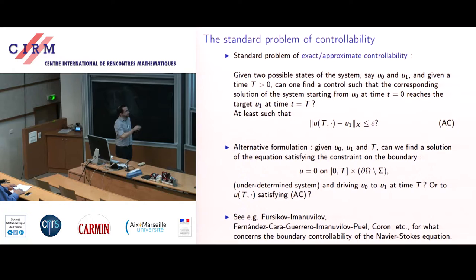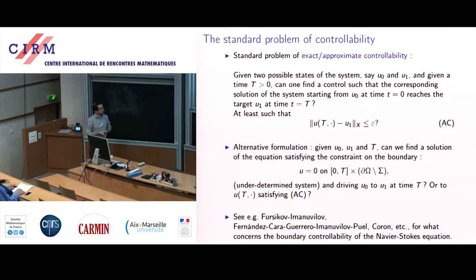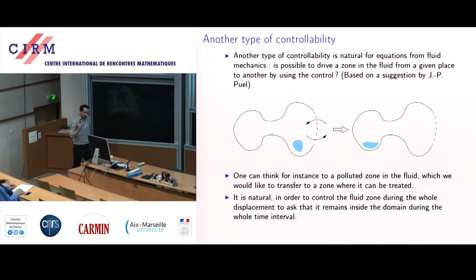There are many references about what concerns the controllability of the Navier-Stokes systems — it's still a subject with a lot of ongoing research. But this is not the type of controllability I am going to consider. Instead, I am going to consider the so-called Lagrangian controllability, which is a question that emerged a few years ago, mainly due to suggestions by Jean-Pierre Puel.